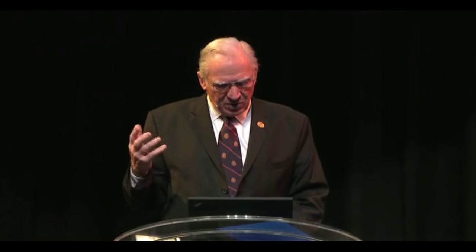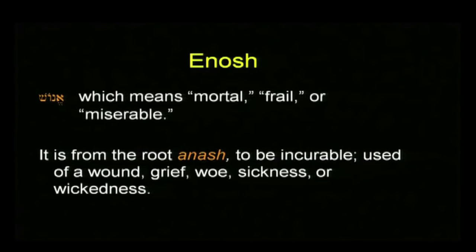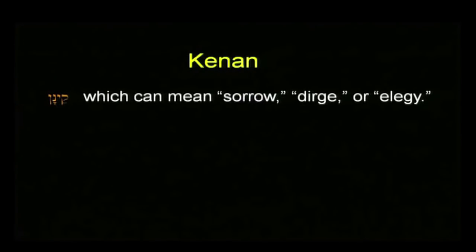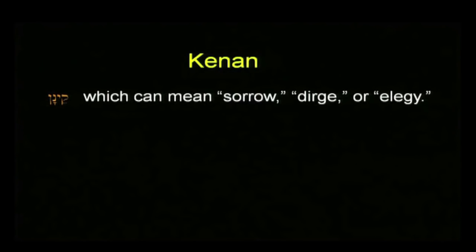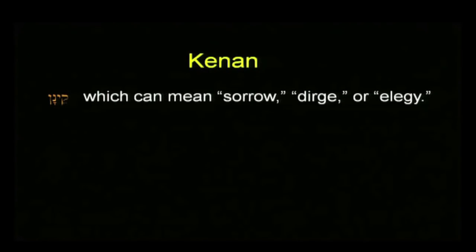The next one is Enosh, and that is a verb which means mortal, frail, or miserable, from the root Anosh, which is usually used of a wound or grief or something like that. Pretty tough handle to go through school with. He has a son by the name of Kenan — not Canaan, as some of your Bibles have — because Balaam does a pun on those names in Numbers. But the point is, that word can mean sorrow, dirge, or elegy. That's another tough label to go through school with.